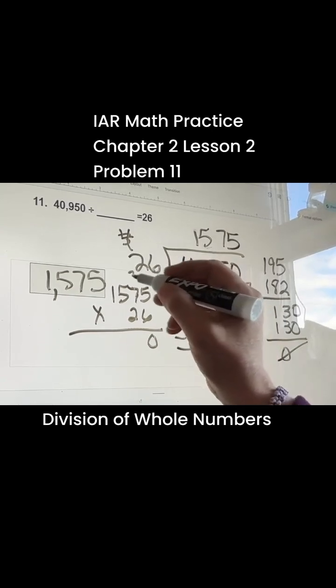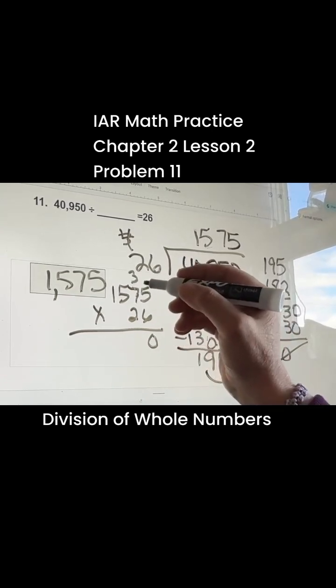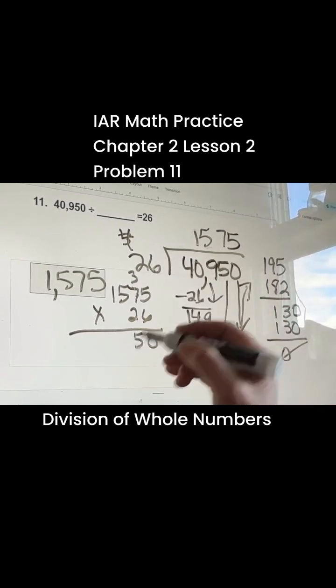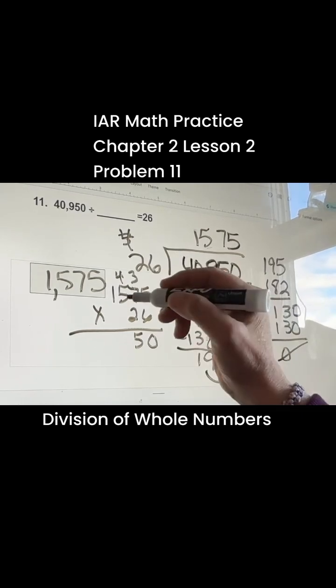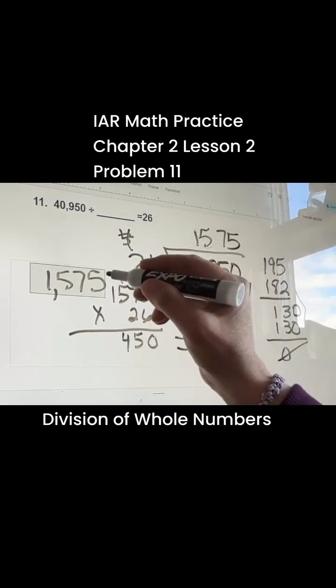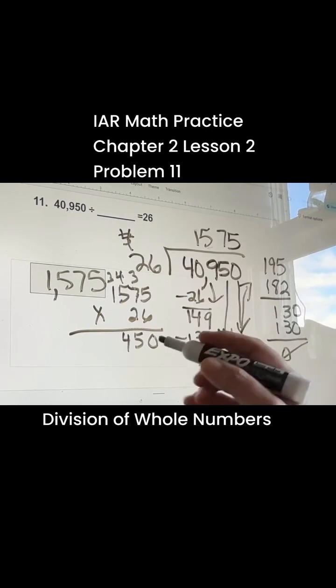6 times 5 is 30, 6 times 7 is 42, plus 3 is 45, 6 times 5 is 30, plus 4 is 34, 6 times 1 is 6, plus 3 is 9.